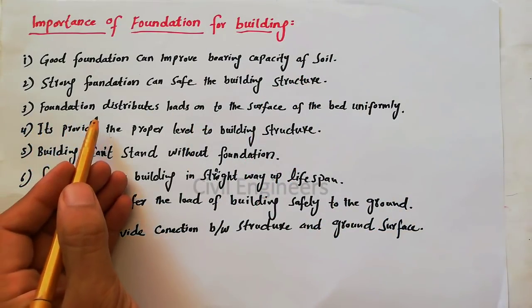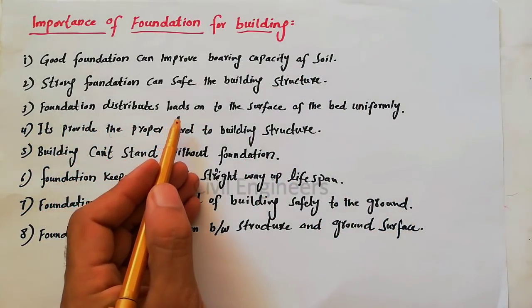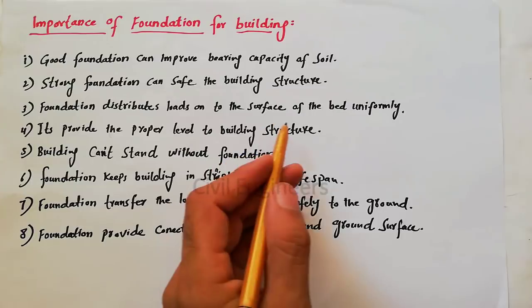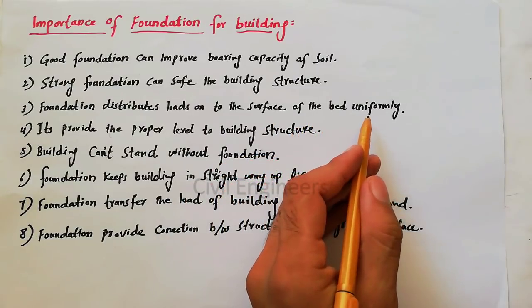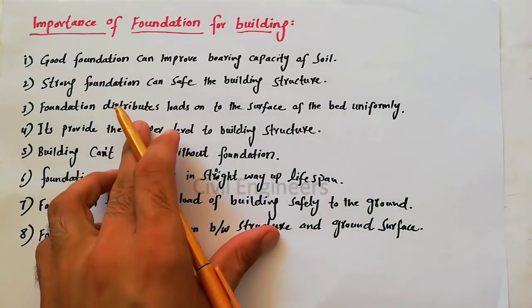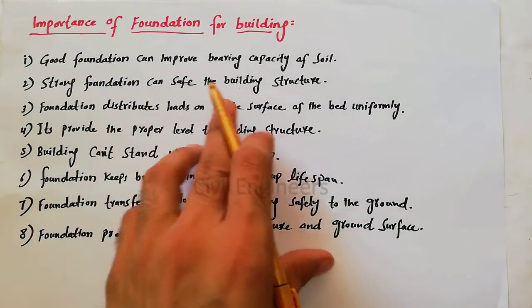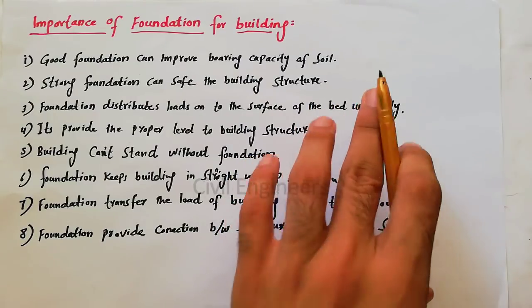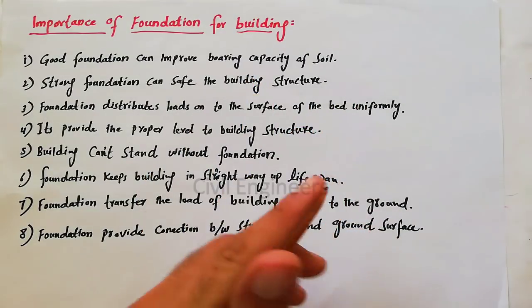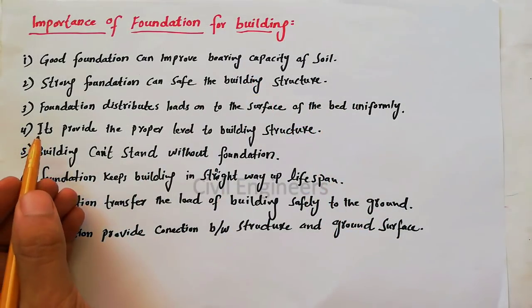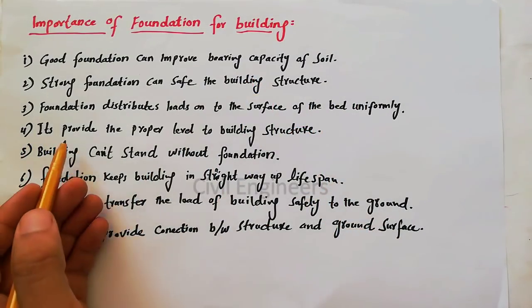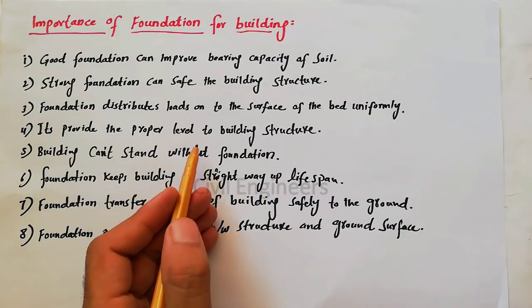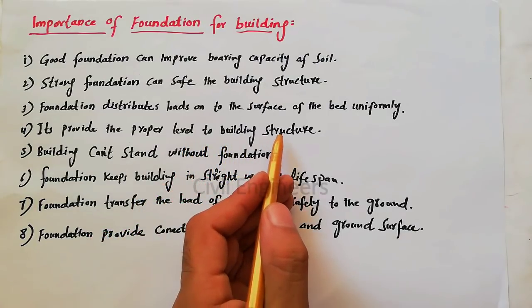The third point is that a foundation distributes loads on the surface of the bed uniformly. It distributes your load on the surface of the bed uniformly. The fourth point is that it provides the proper level to the building structure.